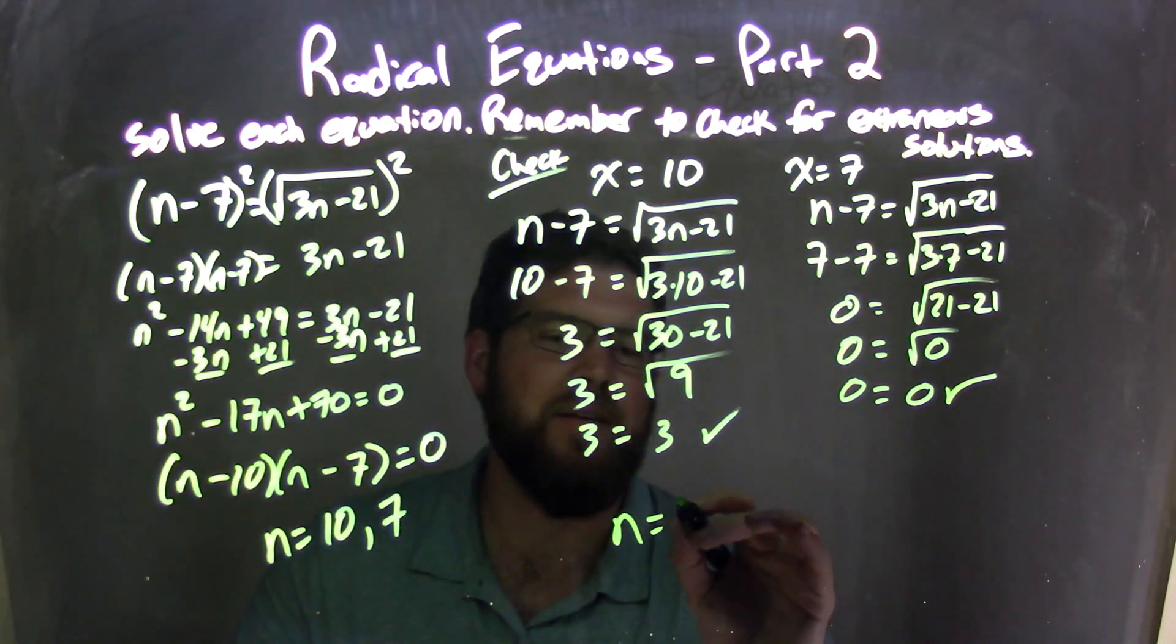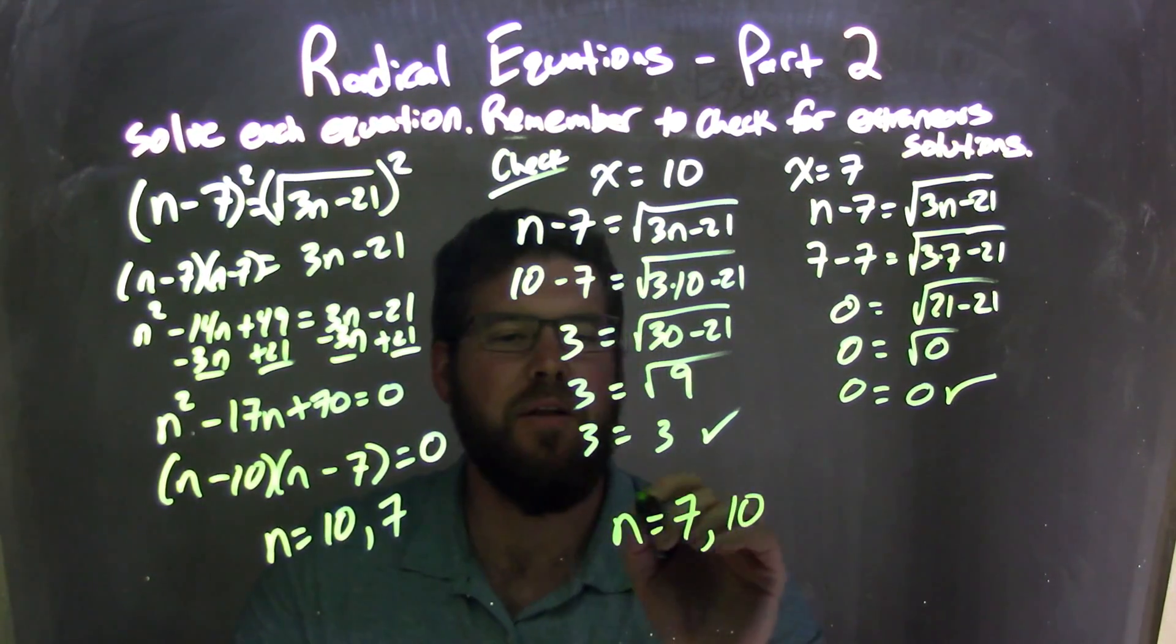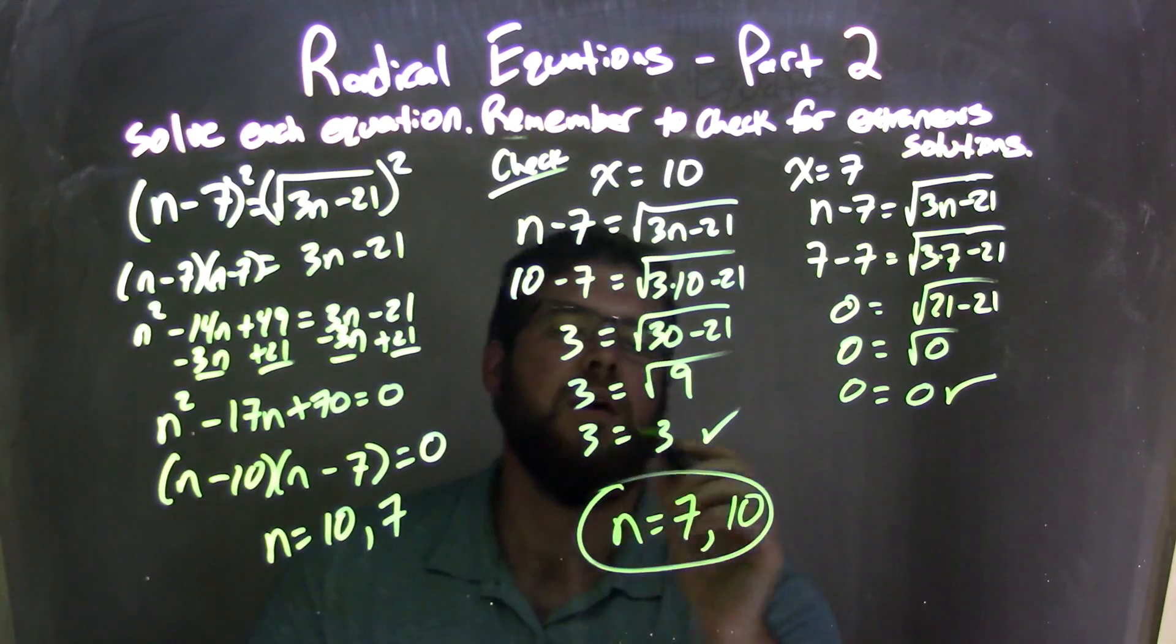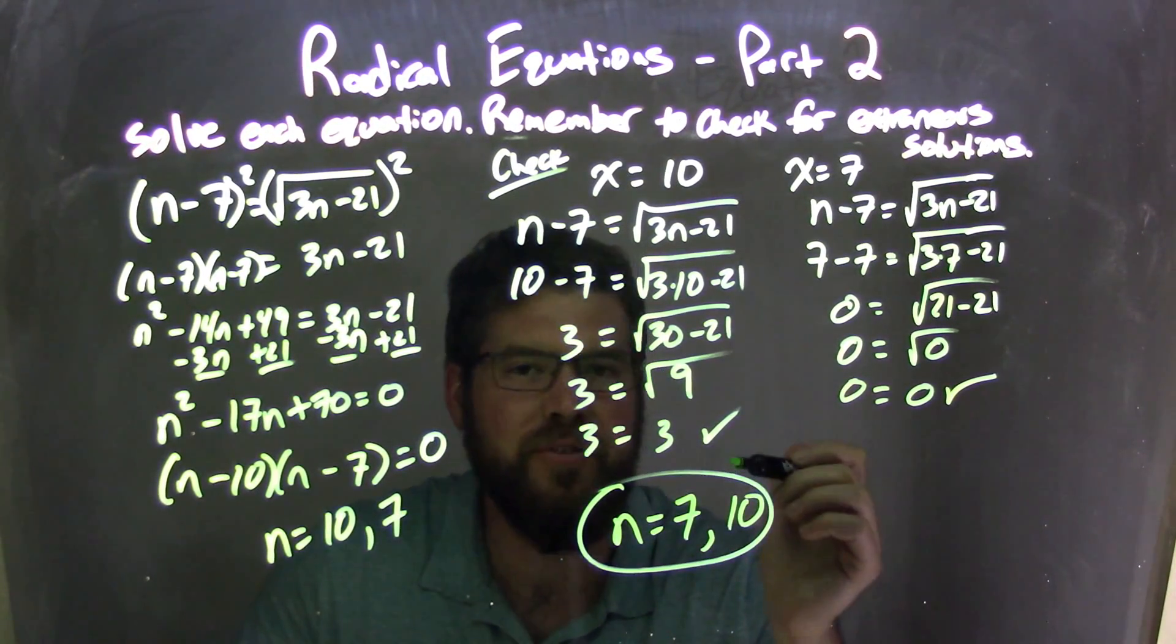So when I rewrite this, I'm going to write from least to greatest, 7 and 10. It's a little nicer and neater. So our two answers here are n equals 7 and n equals 10. So let's recap.